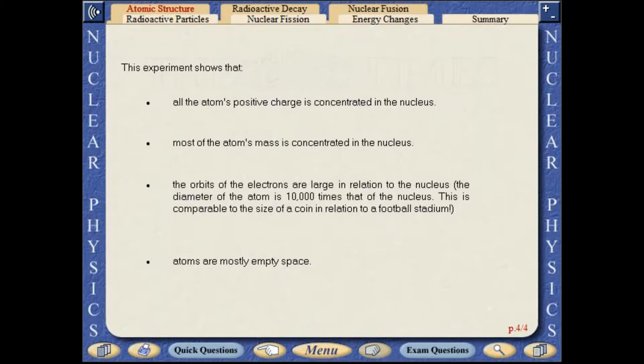This experiment shows that all the atom's positive charge is concentrated in the nucleus. Most of the atom's mass is also concentrated in the nucleus. The orbits of the electrons are large in relation to the nucleus.